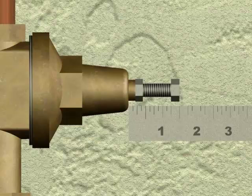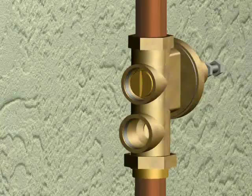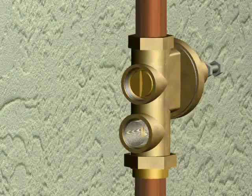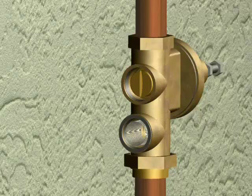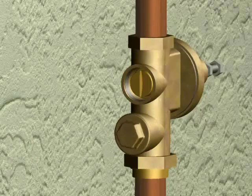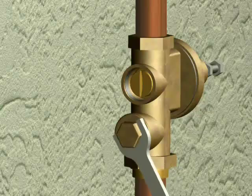Turn the adjustment bolt clockwise until the bolt is at its original height. Install your new screen and the cap gasket before threading strainer cap back onto the body. Tighten clockwise with a wrench.